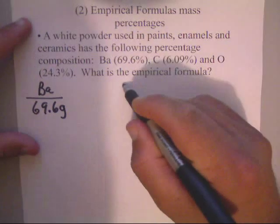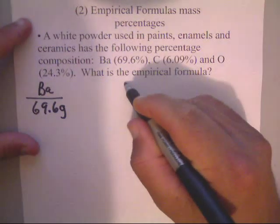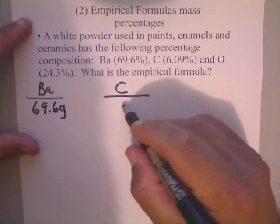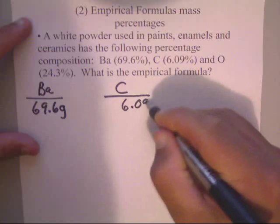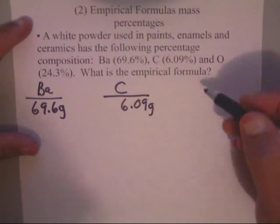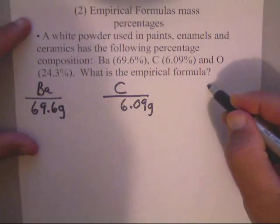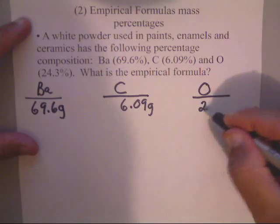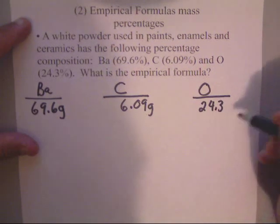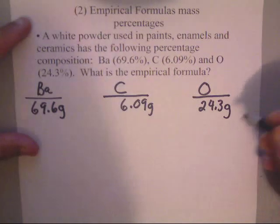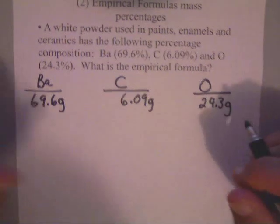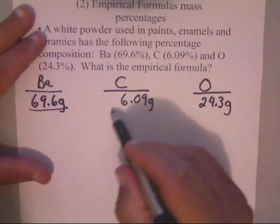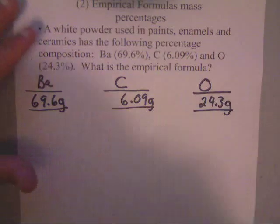So let's do that same thing for carbon. You've got carbon, and we're going to pretend that its percent sign falls off and it turns into grams, so that's 6.09 grams of carbon. And the oxygen, same thing on the oxygen, they tell us that we've got 24.3%, which falls off and changes to grams. Now, just like in the other problem, we're going to divide these by their respective molar mass, so we get them off the periodic table.